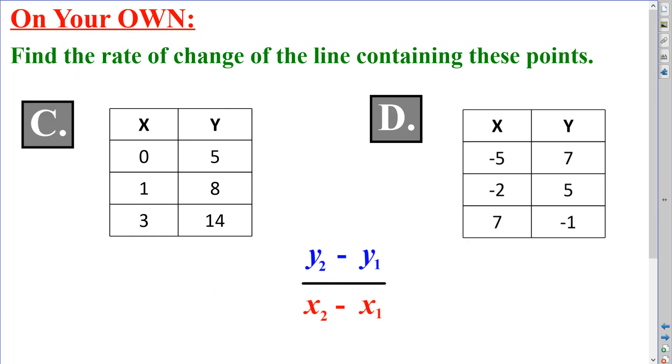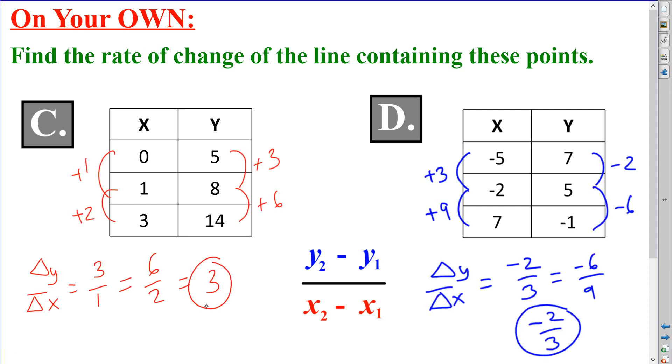Why don't you give these two a try on your own? Pause the movie and then check your results. Okay, let's see how you did. The slope for c was 3, and the slope for d was negative 2 thirds. I hope this tutorial helps you find the rate of change when given a question four different ways.